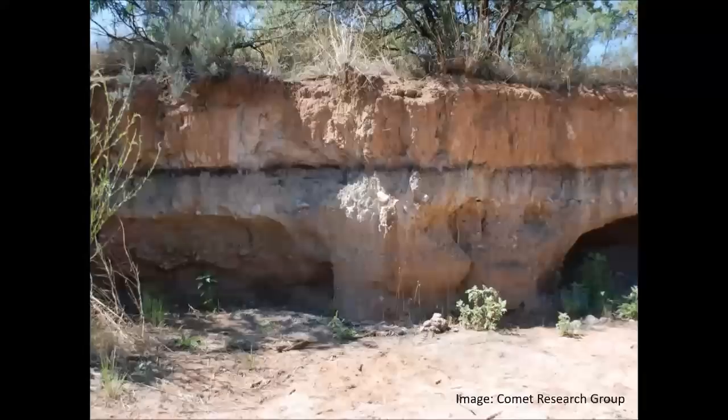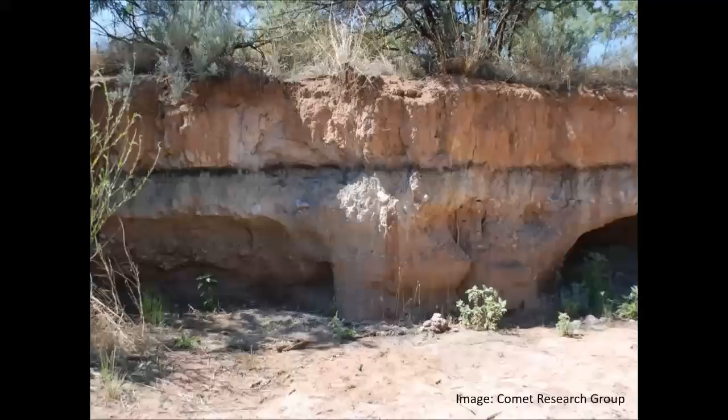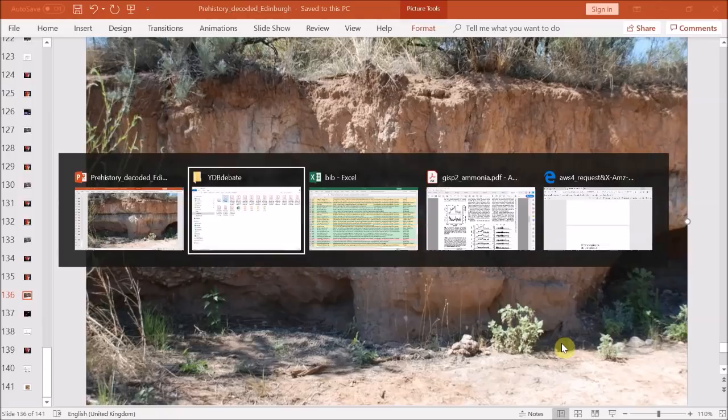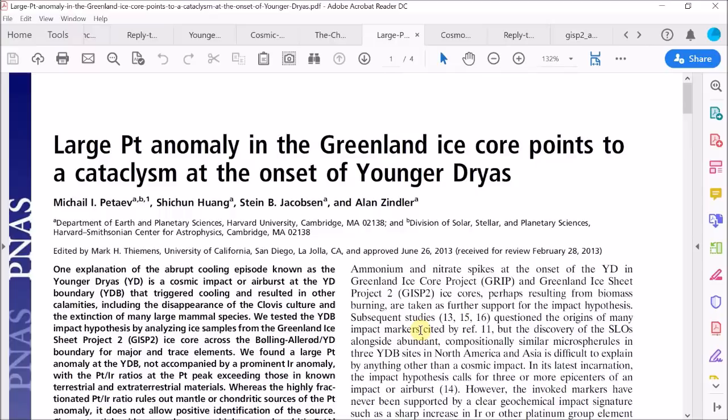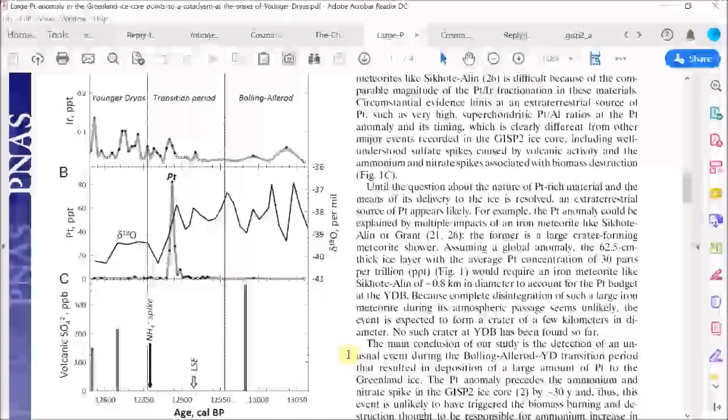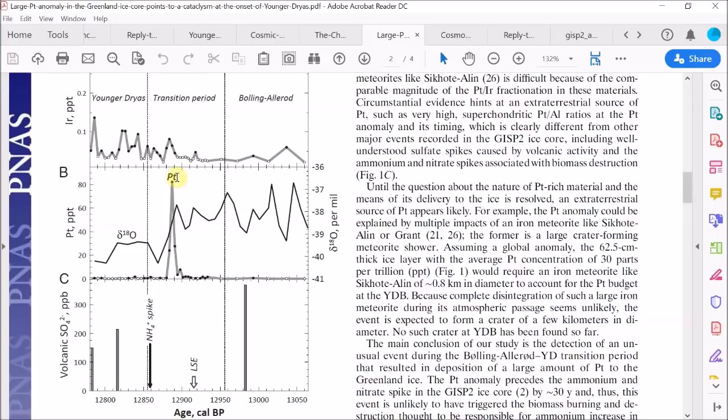This year, the most important paper after the original Firestone paper in 2007 is published by Petayev et al from Harvard University. They found a new impact marker that is easy to measure, platinum. So here is their main result. It shows a massive spike in platinum in the Greenland ice sheet from the GISP II ice core. So along the bottom here, we have the age of that particular ice layers relative to 1950 AD. That's what Cal BP means. And on this axis, we have the platinum spike. And this other line here is an oxygen isotope trace. That's essentially a proxy for the temperature. Now, there are many important things about this. It's the key to solving the Younger Dryas impact debate.